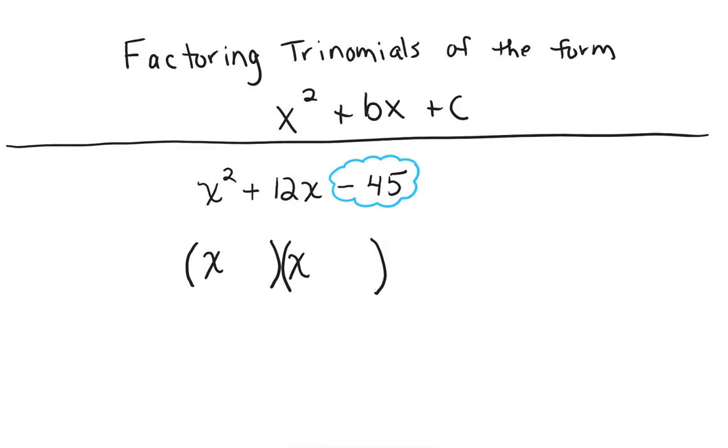And I'm like, okay, 1 times 45 is 45, 2 doesn't work, 3 times 15 is 45, 4 doesn't work, 5 times 9 is 45, 6 doesn't work, 7 doesn't work, 8 doesn't work, 9 I've got, so I'm done. There are three pairs of numbers that multiply to give you 45.